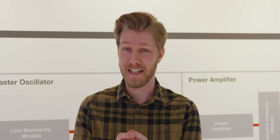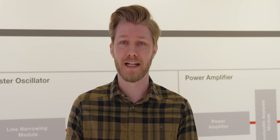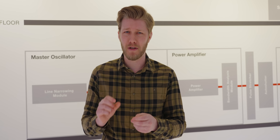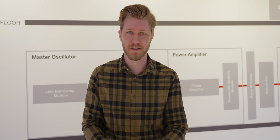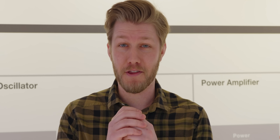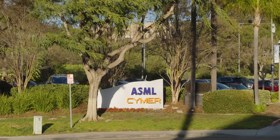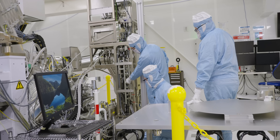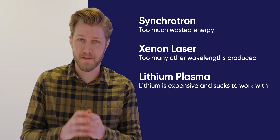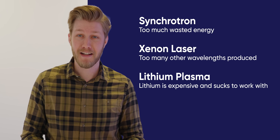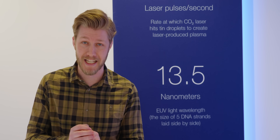It turns out 13.5 nanometers, or extreme ultraviolet, is basically the smallest wavelength that you can use that still mostly bounces off of mirrors. Producing this 13.5 nanometer EUV light is what the incredibly smart folks here in San Diego have figured out. There are multiple ways to create 13.5 nanometer light, but the best way is to blast tin with a laser and turn it into plasma.